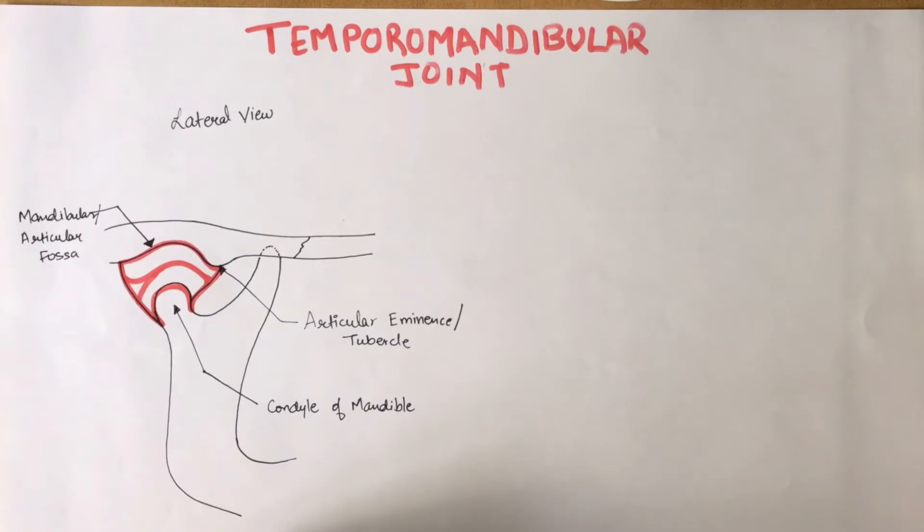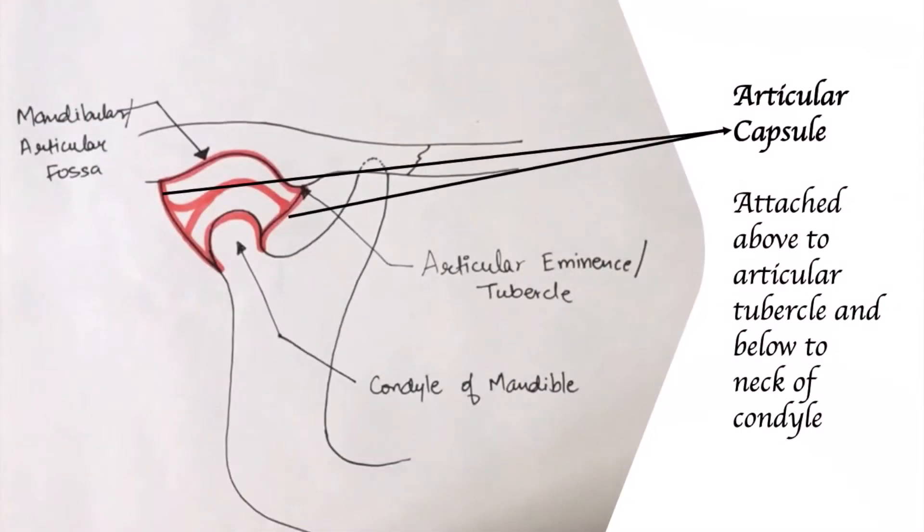Next, let's look into the articular capsule and the disc. The articular capsule, also known as the capsular ligament, is a thin loose envelope that surrounds the joint and attaches above to the articular tubercle and below to the neck of the condyle of the mandible.